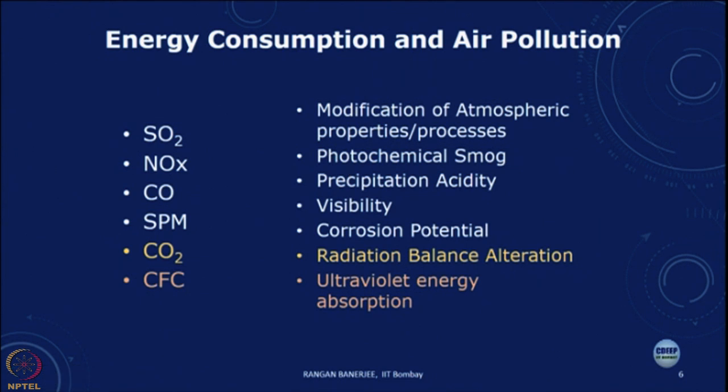One impact is the modification of atmospheric properties and processes. In the case of sulphur dioxide and SOx, it combines and can cause precipitation acidity — acid rain — which can corrode a variety of equipment. There can be photochemical smog affecting visibility, and corrosion potential. Radiation balance alteration — which we will discuss in more detail in relation to CO2 and ultraviolet energy absorption — is another impact. The impacts can be at the local, regional, or global scale; these are just some examples of air pollutants which have an impact on the environment.